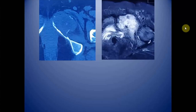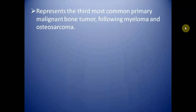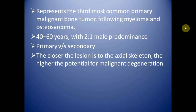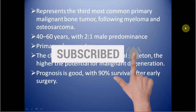CT of the same patient shows an expansile lytic lesion involving the left pubic rami with thinned-out cortex. MRI shows the lesion appearing very hyperintense on fluid-sensitive sequences with extensive post-contrast enhancement. Chondrosarcoma represents the third most common primary malignant bone tumor following myeloma and osteosarcoma, affecting 14 to 60 years with a 2-to-1 male predominance. It can be primary or secondary due to degeneration in osteochondroma or enchondroma. The closer the lesion to the axial skeleton, the higher the potential for malignant degeneration. Prognosis is good with 90% survival after early surgery.